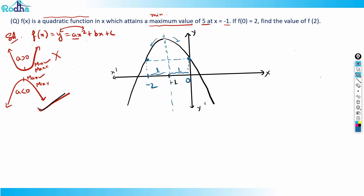So basically the values will be the same. The graph at x equal to minus 2 or x equal to 0 gives the same value. So if f(0) equals 2, I should automatically understand that f(minus 2) will also equal 2, because x=0 is 1 unit right from the line of symmetry, so 1 unit left also gives the same value. And f(minus 1) equals 5. So these three equations will give the values of a, b, and c, and then I can find f(2).